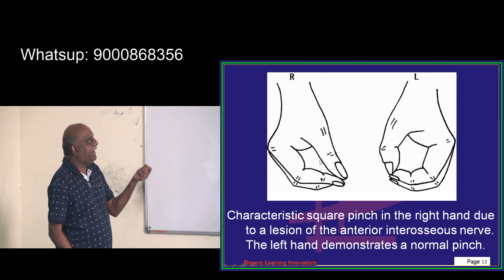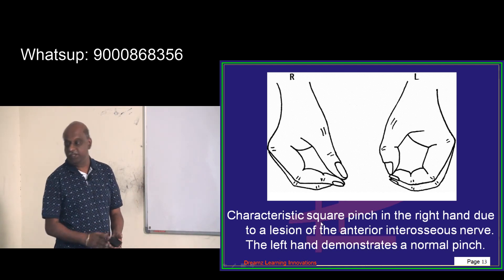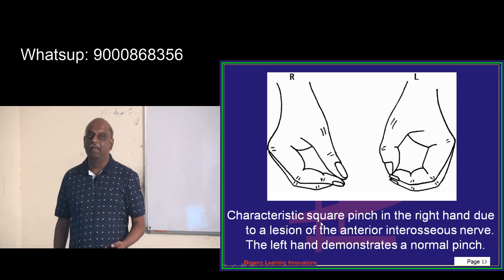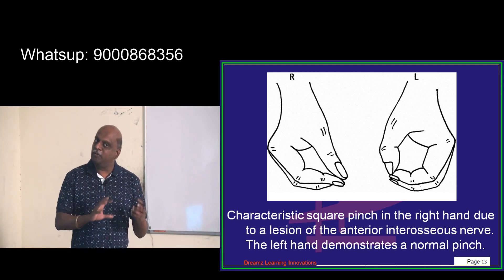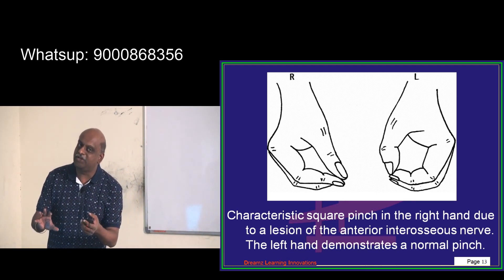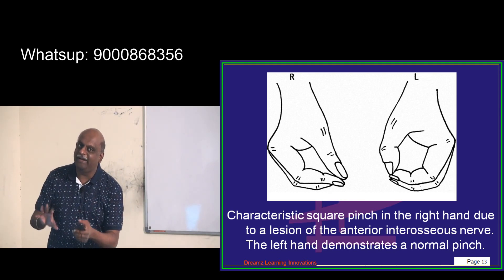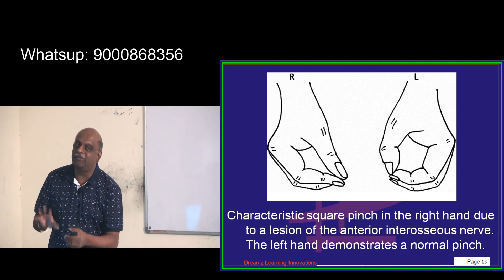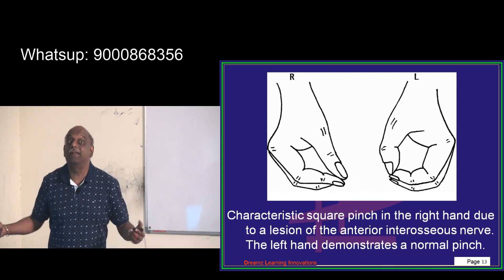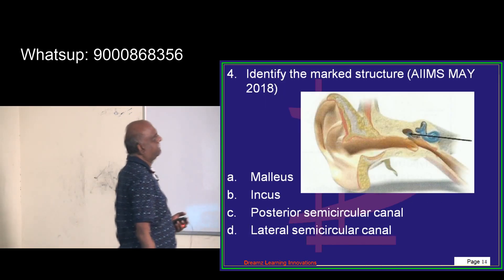This is the normal hand and this is the abnormal hand where the paralysis is seen. In a future AIIMS or NEET-PG exam, a similar image may be given and the examiner will ask what nerve is involved. You should be confident to answer it.